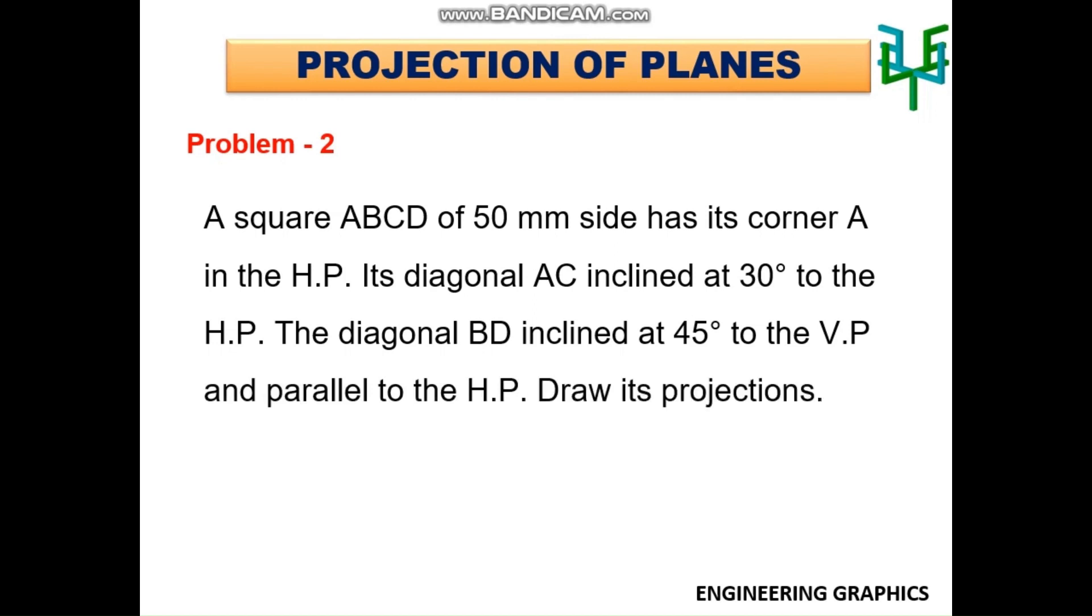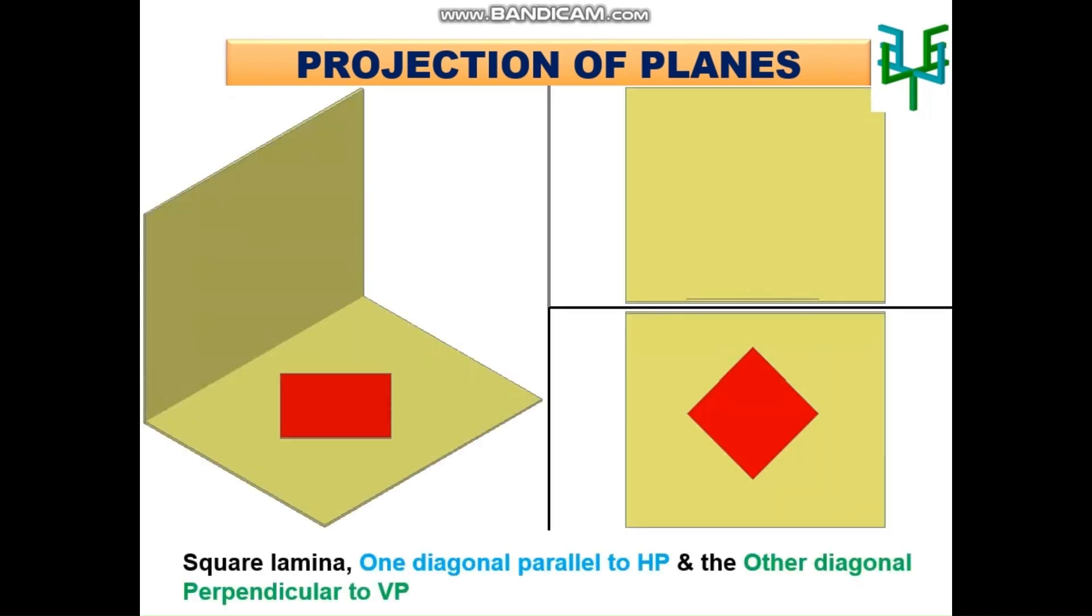In this problem, one diagonal of the square lamina is inclined to HP and the other diagonal is inclined to VP. So initially, we have to assume that the diagonal is parallel to HP and the other diagonal is perpendicular to VP.